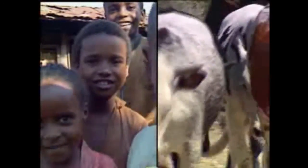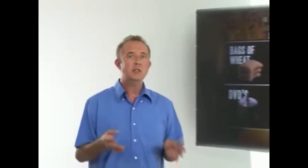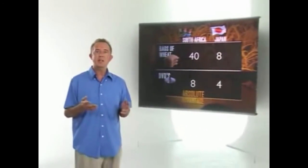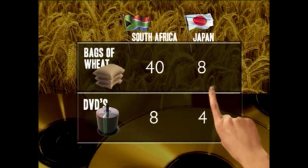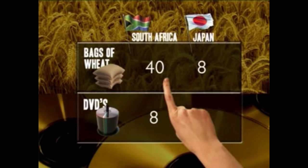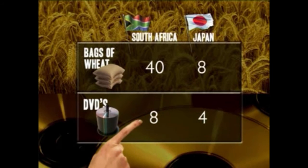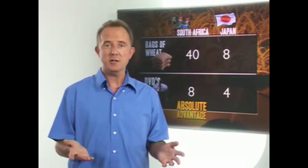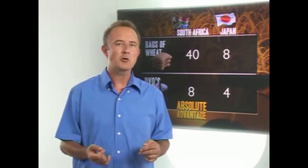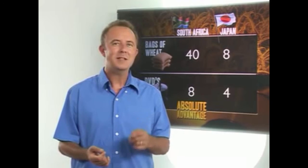Let's try and take the theory a bit further. According to this new table, we assume that South Africa has an absolute advantage with both products — it can efficiently produce either wheat or DVDs. Looking at this new data, it would seem that there is no longer any reason for trade between these two countries. But this is not quite true — let's see why.